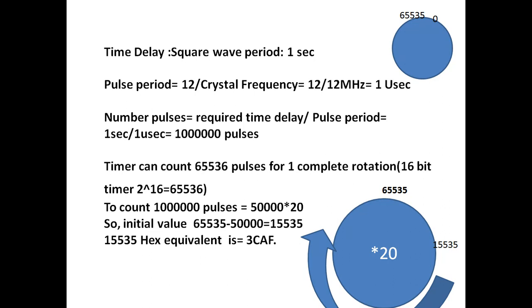Based on the capacity of timers, timers can able to count number of pulses based on the capacity. If timers supports 16 bit, then it can count 2 power 16 pulses for one complete cycle.